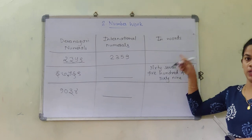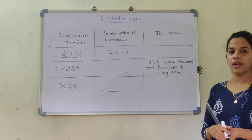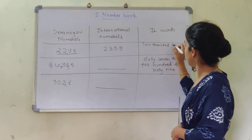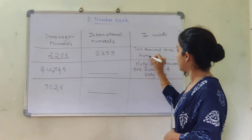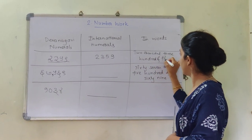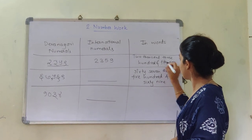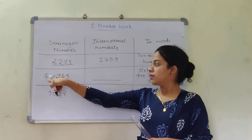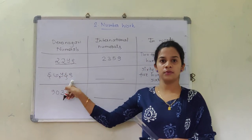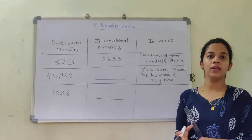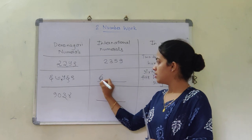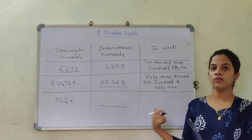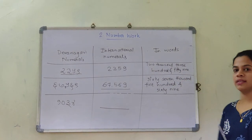Now they have asked us to complete this also — in words. Can you tell me in words how am I going to write it? It is two thousand, three hundred and fifty. Now we will see the next example. How am I going to write in international numbers? It is 67,569. So that is what we wrote over here — 67,569.